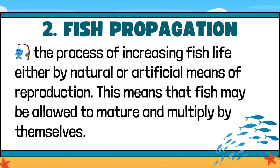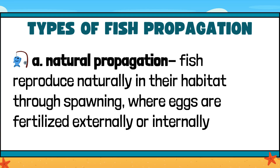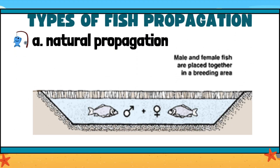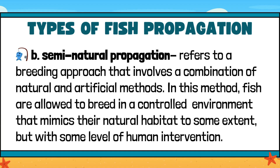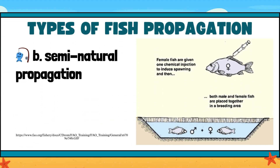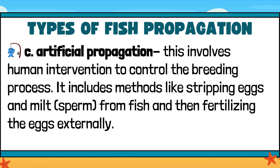Fish Propagation is the process of increasing fish life either by natural or artificial means of reproduction. Fish may be allowed to mature and multiply by themselves. Types: A. Natural Propagation — fish reproduce naturally in their habitat through spawning, where eggs are fertilized externally or internally. B. Semi-natural Propagation — a breeding approach combining natural and artificial methods; fish breed in a controlled environment that mimics their natural habitat, but with some human intervention. C. Artificial Propagation — involves human intervention to control the breeding process, including methods like stripping eggs and milt (sperm) from fish and then fertilizing the eggs externally.